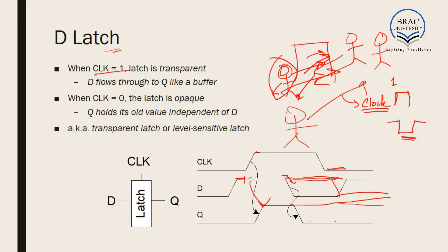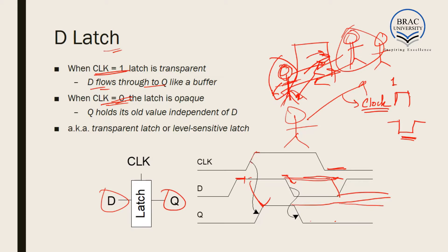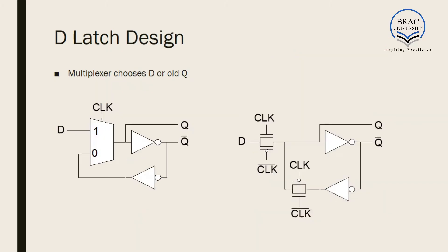So what the latch does is: when the clock is one, D flows through to Q — whatever is in D will reach Q. If the clock is zero, Q holds its earlier value. When the clock turns zero, Q will hold the value it had at the moment the clock shut — if Q was zero it stays zero, if Q was one it stays one. This is a basic latch.